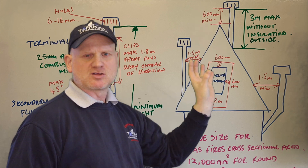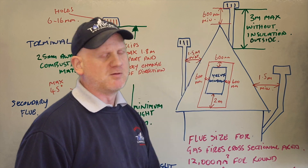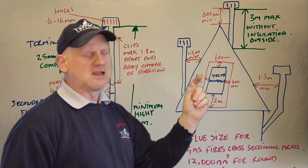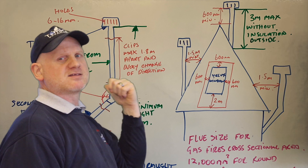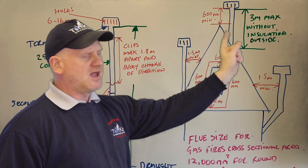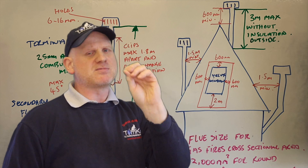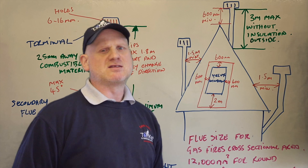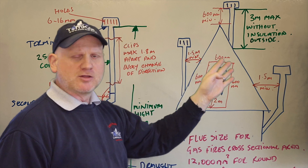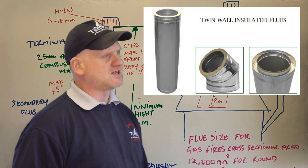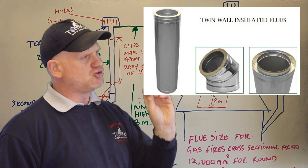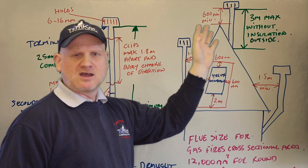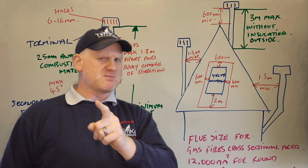Those are the main things to look out for when open flue appliances exit through the roof. Also, the maximum length you can have outside the property without insulation is three meters. If you've got more than three meters of pipe outside, it must be insulated twin wall pipe — not just relying on the air gap of the twin wall.